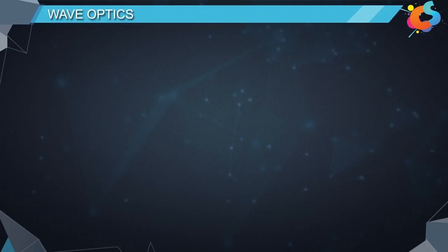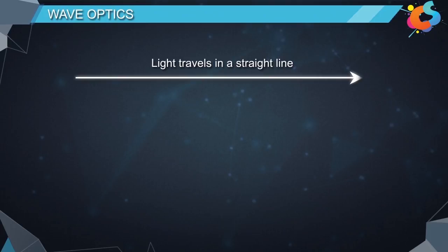Wave Optics. In the previous chapter Ray Optics, by assuming that light travels in a straight line, we easily explained the concepts of reflection, refraction, and dispersion.